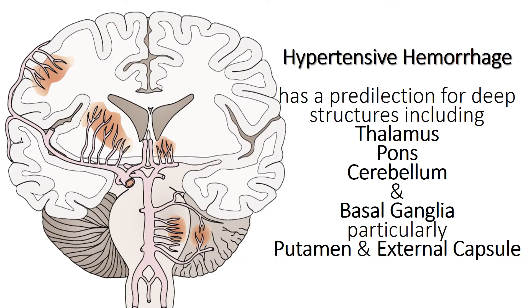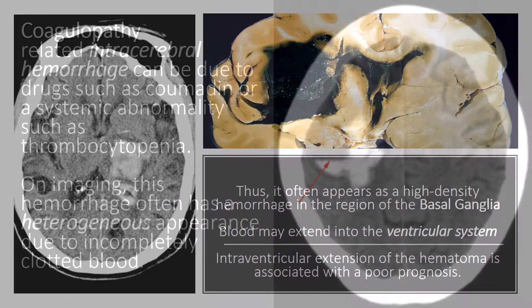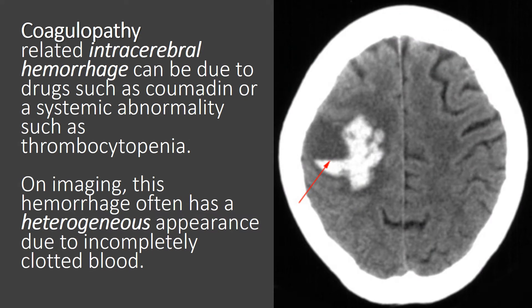Hypertensive hemorrhage has a predilection for deep structures including the thalamus, pons, cerebellum, and basal ganglia, particularly the putamen and external capsule. It often appears as a high-density hemorrhage in the region of the basal ganglia. Blood may extend into the ventricular system, and intraventricular extension of the hematoma is associated with poor prognosis. Coagulopathy-related intracerebral hemorrhage can be due to drugs such as Coumadin or a systemic abnormality such as thrombocytopenia. On imaging, this hemorrhage often has a heterogeneous appearance due to incompletely clotted blood.